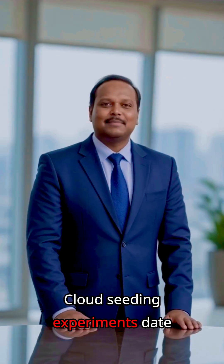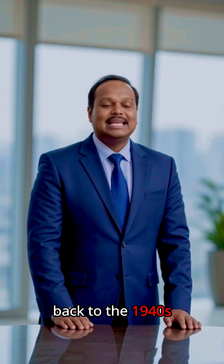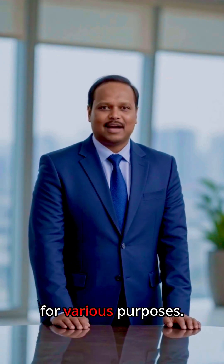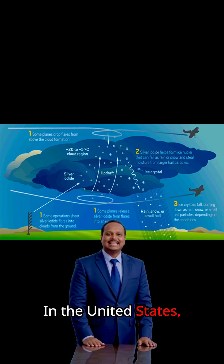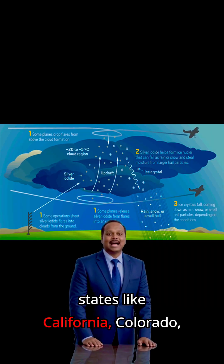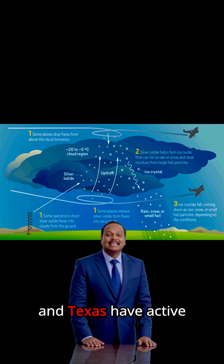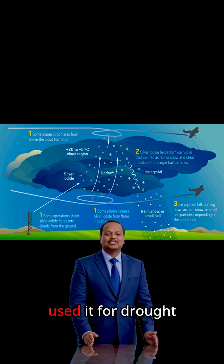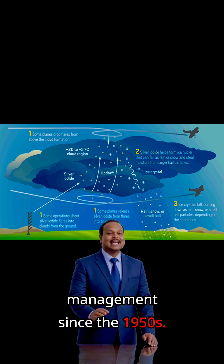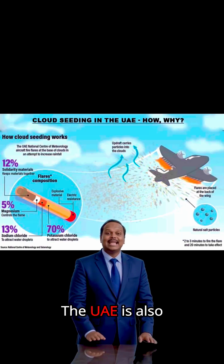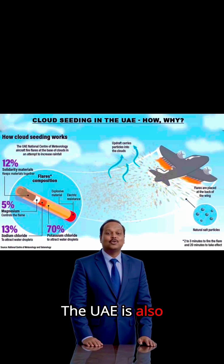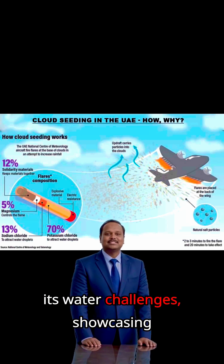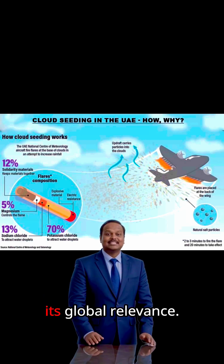Cloud seeding experiments date back to the 1940s and are now used in over 50 countries for various purposes. In the United States, states like California, Colorado, and Texas have active programs, while India has used it for drought management since the 1950s. The UAE is also a pioneer in using this technology to address its water challenges, showcasing its global reach.